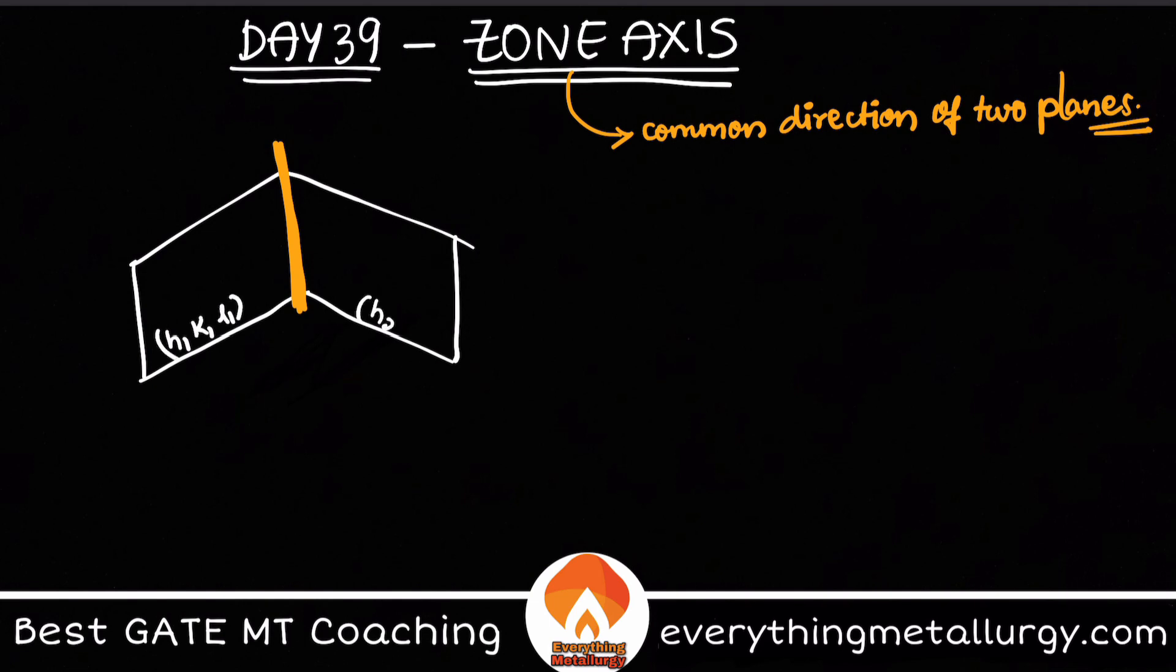And let the zone axis be u v w. So I already said this u v w is the common direction to my two given planes h1 k1 l1 and h2 k2 l2. So this is nothing but the zone axis. Now the problem is if you know the miller indices of h1 k1 l1 and h2 k2 l2, how can I calculate this zone axis?